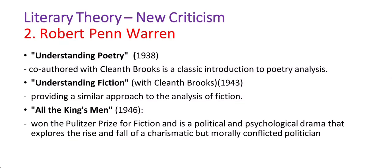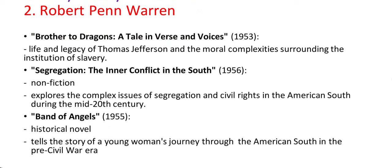Warren's next important work is All the King's Men, perhaps his most famous work. This novel won the Pulitzer Prize for fiction and is a political and psychological drama that explores the rise and fall of a charismatic but morally conflicted politician. Another notable work is Brother to Dragons: A Tale in Verse and Voices, a long poem that delves into the life and legacy of Thomas Jefferson and the moral complexities surrounding the institution of slavery. He also wrote Segregation: The Inner Conflict in the South (1956), an important non-fiction work exploring complex issues of segregation and civil rights in the American South.